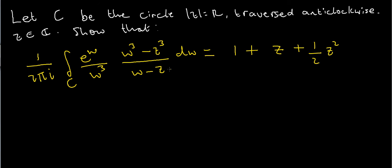First things first, notice that using the difference of two cubes rule, I can write w cubed minus z cubed in the following way: w cubed minus z cubed equals w minus z times w squared plus wz plus z squared.